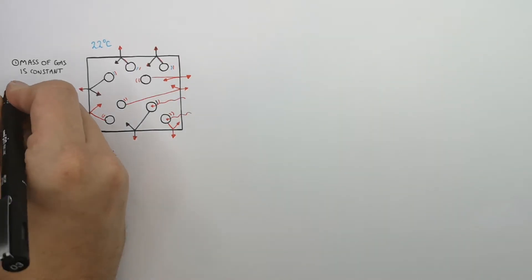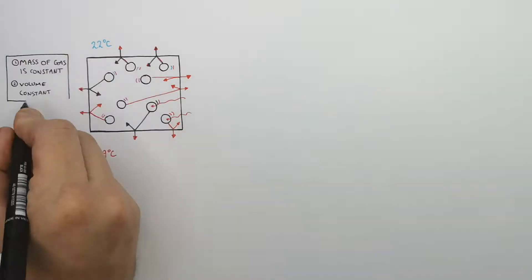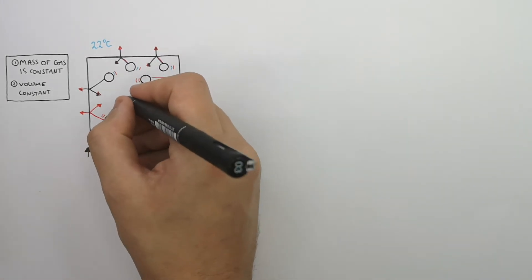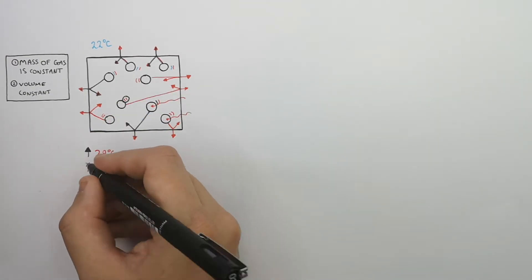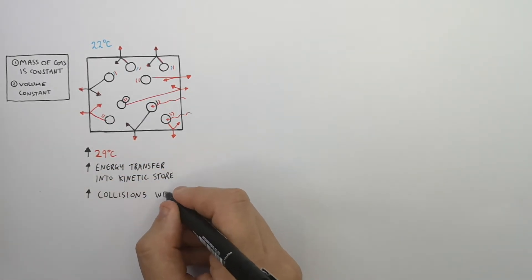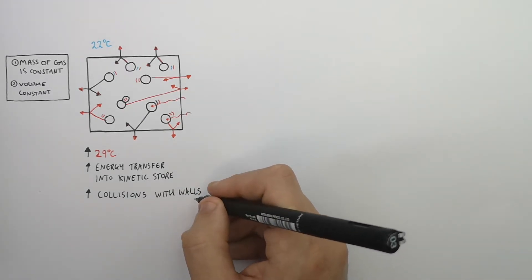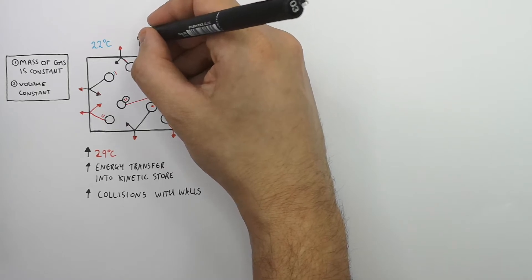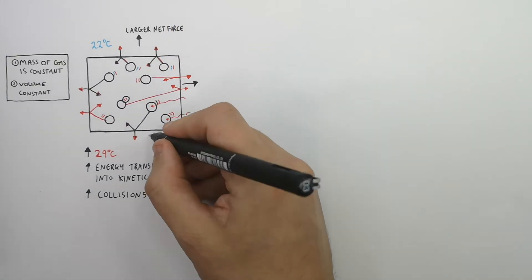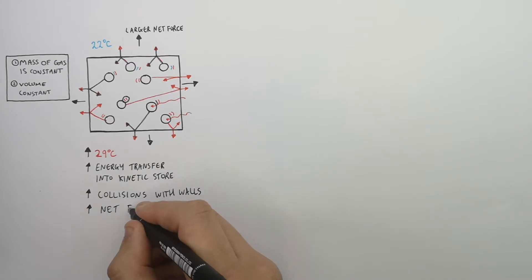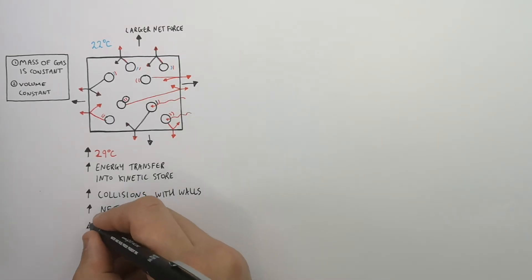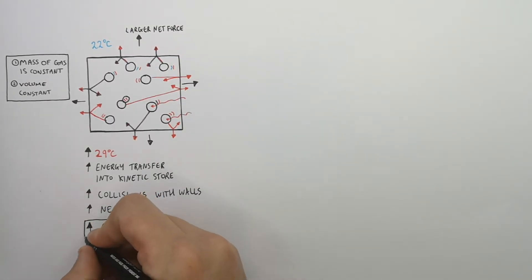The mass of the gas is constant and the volume of the container is constant. The average temperature of the gas particles was increased from 22 degrees Celsius to 29 degrees Celsius, resulting in increased energy transfer into the kinetic energy store of the particles. This increased the collisions between the particles and the surface walls of the container. Because there are now more collisions with the walls, there is a larger net force acting on the surface, which leads to an increase in pressure acting on the sealed container.